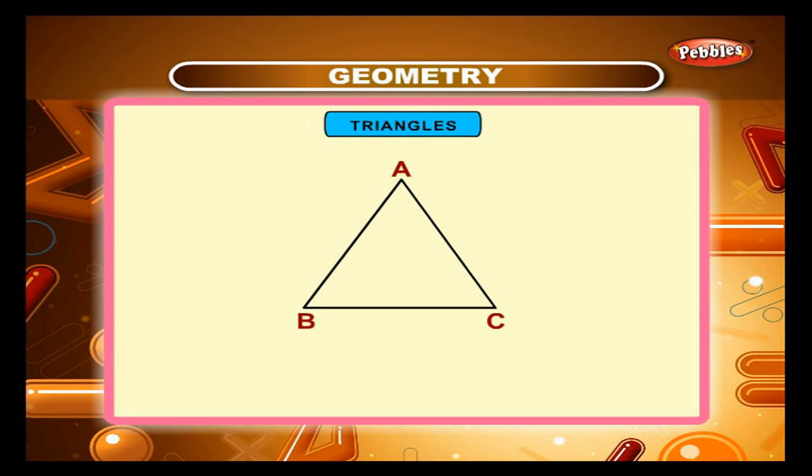This is a triangle ABC. It is a closed figure having 3 line segments and 3 vertices. It also has 3 angles.